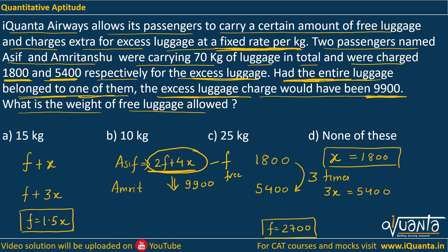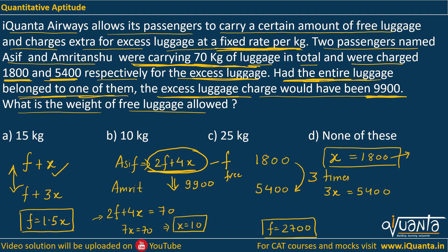Note that x here is the weight of the luggage in kg, while 1,800 is the amount charged for x kg of excess luggage. We were also told that they are carrying a total of 70 kg. So total luggage is 2f plus 4x, and its weight equals 70. We know f equals 1.5x, so substituting: 3x plus 4x equals 7x equals 70, which gives x equals 10. So Asif is carrying 10 kg excess luggage and Amritanshu is carrying 3x, that is 30 kg. The value of free luggage f is 1.5 times 10, which gives us 15.